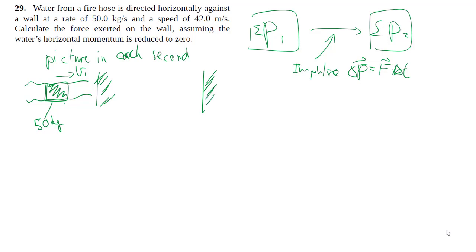And your after picture is this 50 kilogram chunk of water has now crashed against the wall and has a v2 of zero, at least in the horizontal direction.